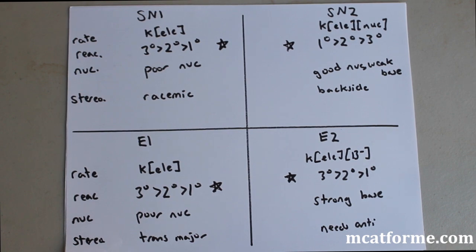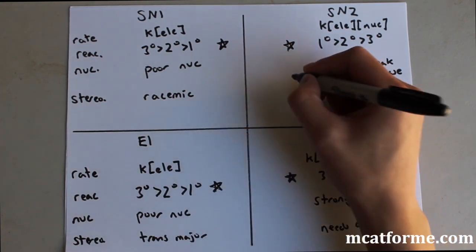Now in terms of the nucleophile, nucleophile for E1 and SN1 are both going to be poor nucleophiles. So that should be pretty easy to remember. But in terms of SN2, this is when it's a good nucleophile, weak base versus a strong base in E2. So that's another thing that's different.